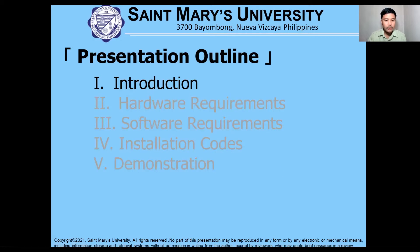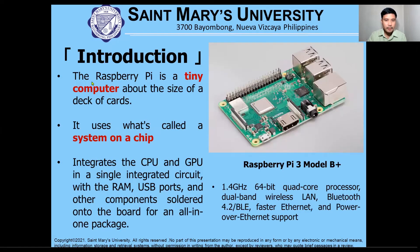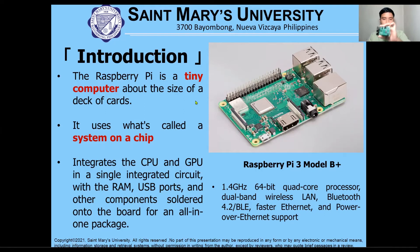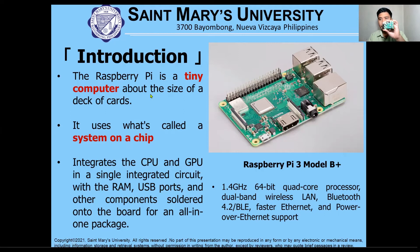Let us start with the introduction. A Raspberry Pi is a tiny computer about the size of a deck of cards. As you can see here, I have a Raspberry Pi 3 Model B+. It is called a tiny computer because basically all the major capabilities — the decomposition of a full computer — are present on this Raspberry Pi board.